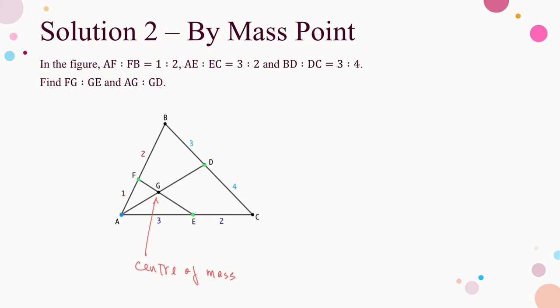When we calculate the mass of G from line segment AD, it is the sum of the mass of A and the mass of D, where the mass of D is the sum of the masses of B and C. However, when we calculate the mass of G from line segment EF, the mass of E comes from the sum of masses of A and C, and the mass of F comes from the sum of masses of A and B. Here the mass of A is counted in both calculations, but it is not supposed to be double counted. The mass of A needs to be split.